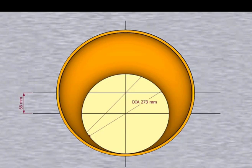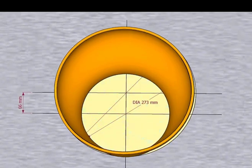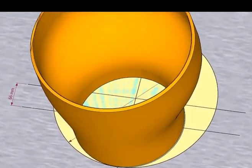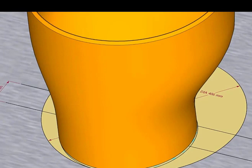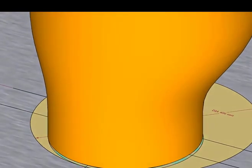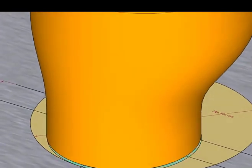Place the reducer on the layout, facing the small end down. Inspect carefully if the reducer sits on the circle correctly.